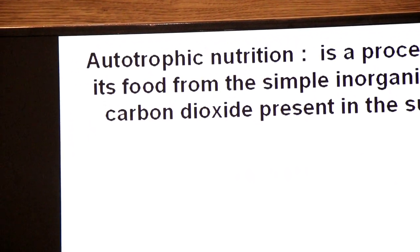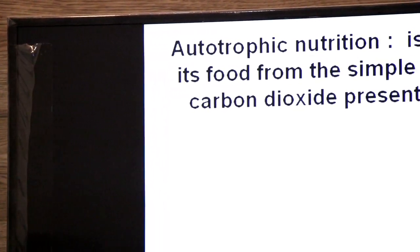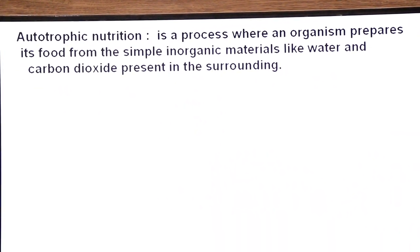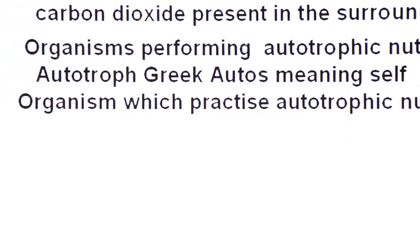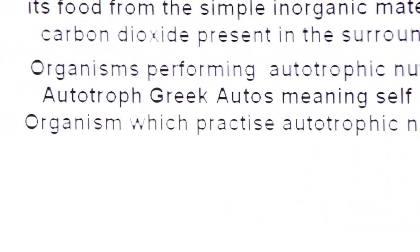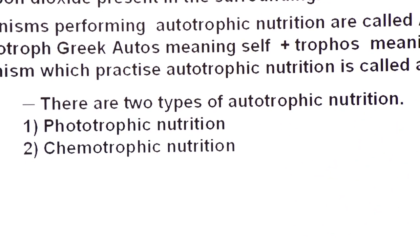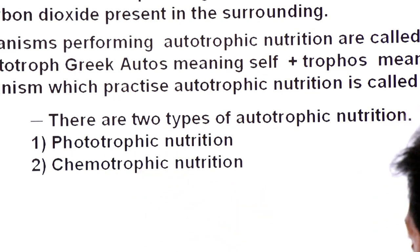Autotrophic nutrition is the process where an organism prepares its own food from simple inorganic materials like water and carbon dioxide present in the surroundings. Organisms performing autotrophic nutrition are called autotrophs. The term 'autotroph' comes from Greek: 'autos' meaning self, plus 'trophos' meaning feed — so, self-feeding. There are two types of autotrophic nutrition: phototrophic and chemotrophic, using sunlight energy and chemical energy respectively.